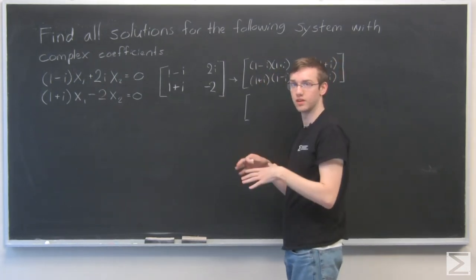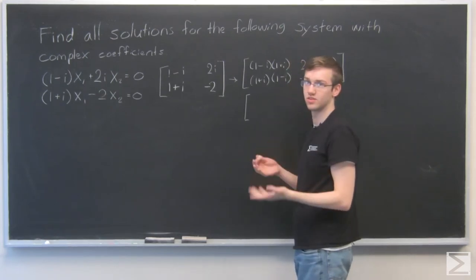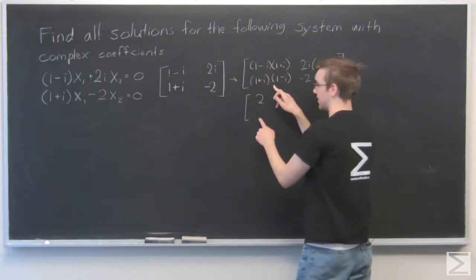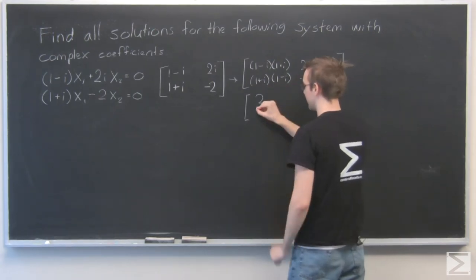And minus i squared is minus minus 1, so that's plus 1. So the answer is just 1 plus 1 is 2. And this is the same product, so that'll be 2 as well.